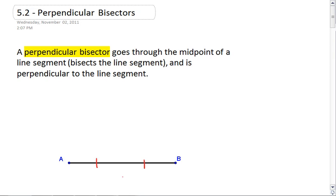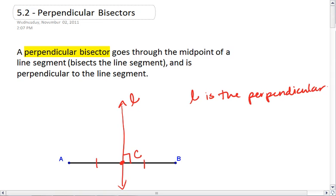We then want to draw a line through that midpoint that is perpendicular to the line segment. In the picture on your screen, L is the perpendicular bisector because it is perpendicular to AB, and because it cuts AB in half.